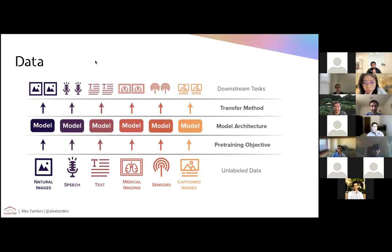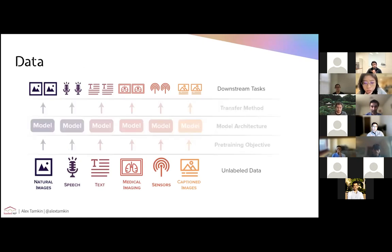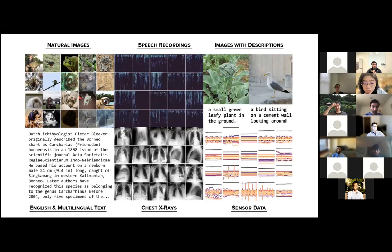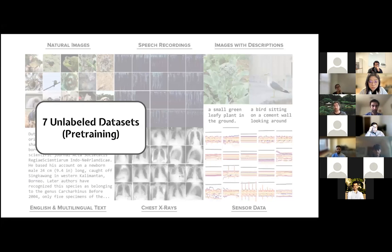Now I'll talk about the DABS benchmark — the data that we actually use, both the unlabeled data used for pre-training as well as the downstream tasks used for transfer. We look at seven different large datasets for pre-training, each encompassing a different type of modality ranging from natural images, speech recordings, images with descriptions, English text, multilingual text, chest X-rays, and sensor data. These are seven unlabeled datasets that really span a wide range of different domains.